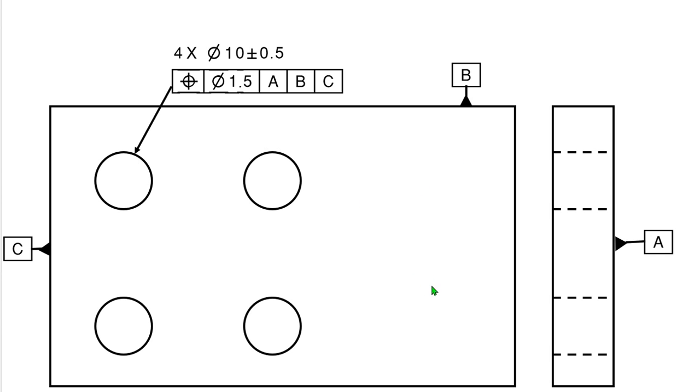So here I have a part with three perpendicular planes, which are my primary, secondary and tertiary ABC. I have a diametrical position called out to ABC. Well, what does that mean?